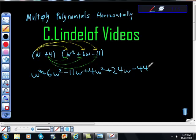Now you must combine your like terms. So we have 6w² and 4w². And we have negative 11w and 24w.